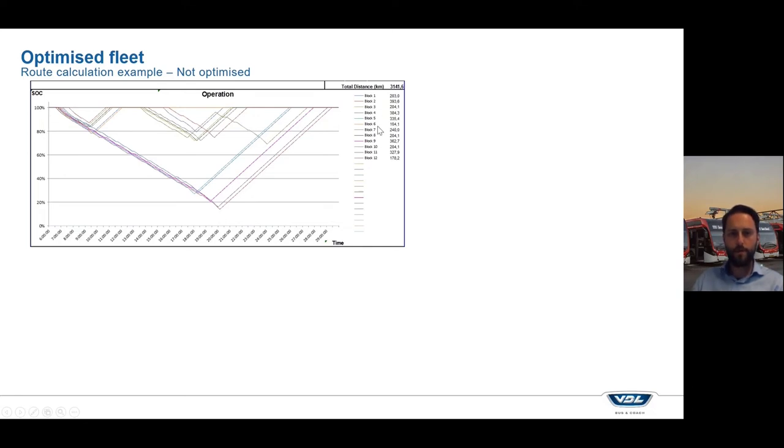What is noticeable are a few things: you have some buses driving only 100 kilometers, while there are also buses driving more than 300 kilometers a day. Something else to notice is that in general, the depth of discharge that you might have is 80 or 90 percent depending on the battery. Let's assume 80 percent. That means that in this calculation, at least two buses are outside of the depth of discharge bandwidth. So we have to solve that issue.